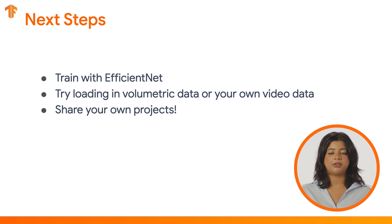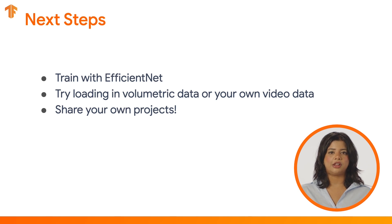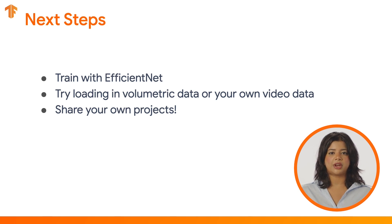EfficientNet is a convolutional neural network architecture method that uniformly scales all dimensions of your input data. We can treat it as the hello world example of using video data for now. Let's try putting our training dataset into a pre-trained EfficientNet model, which trains our data to a high accuracy in just a few minutes.